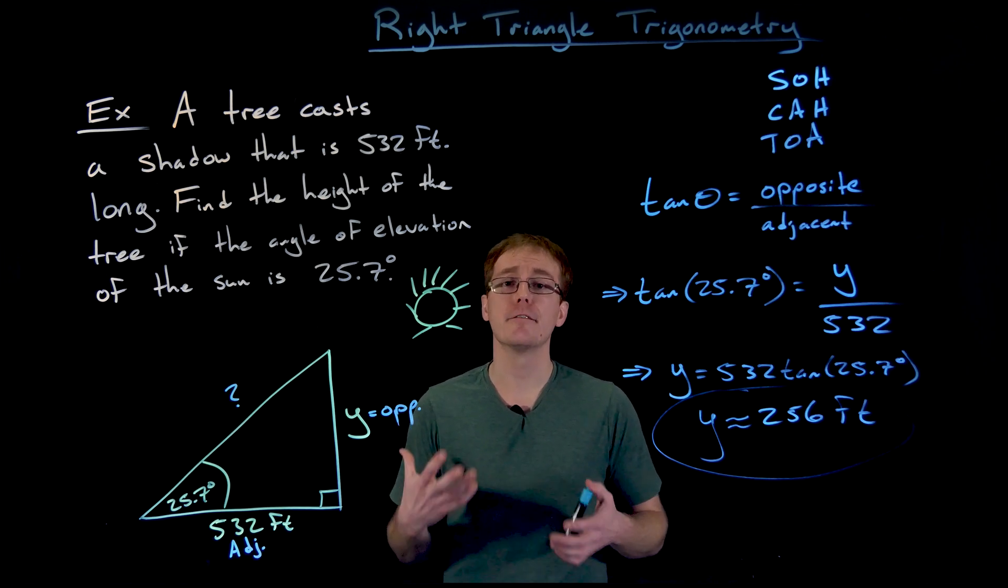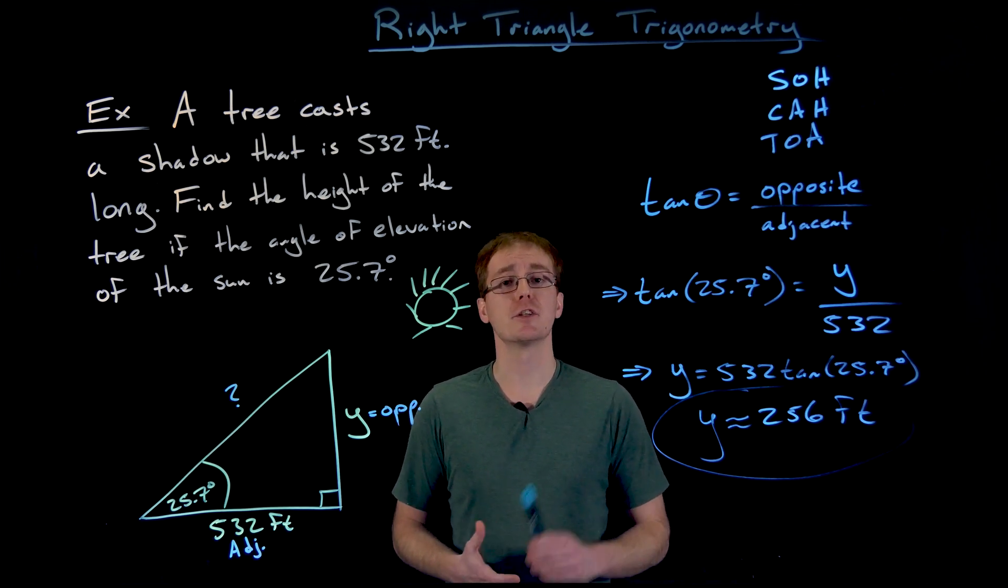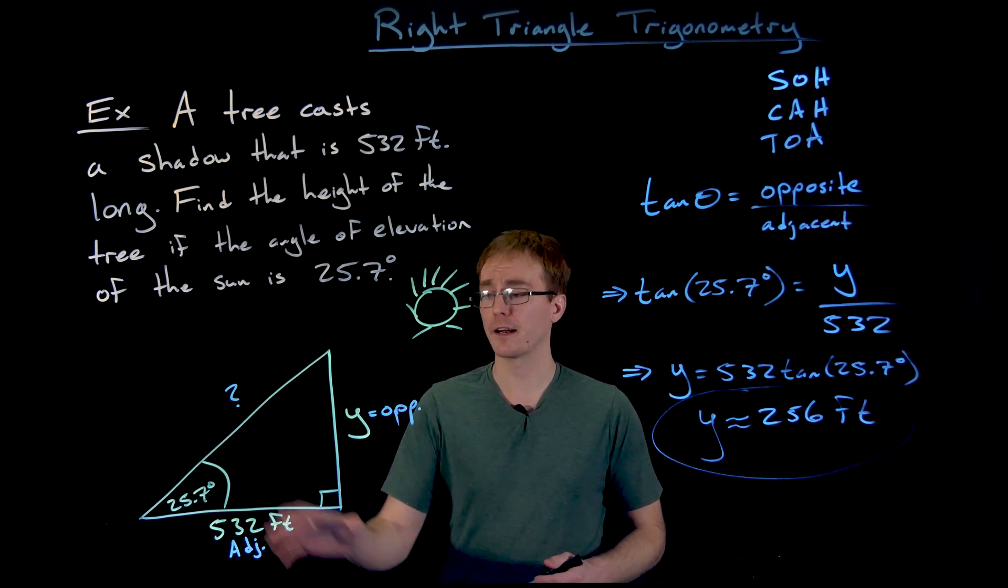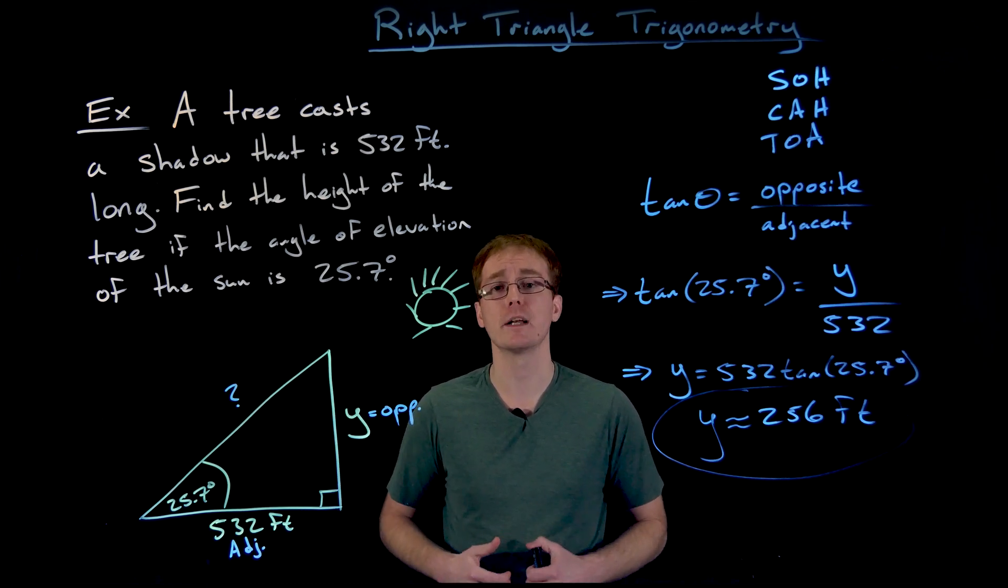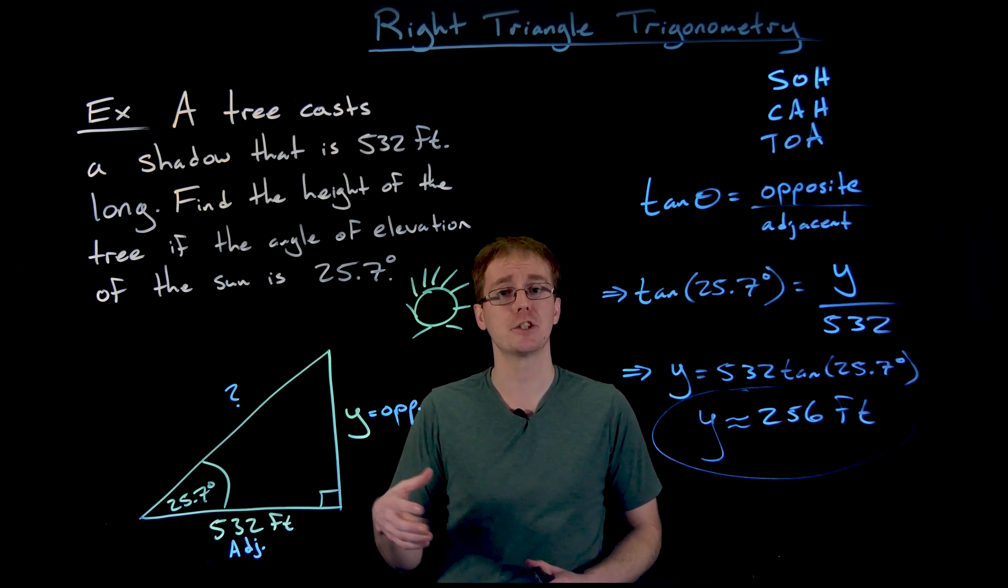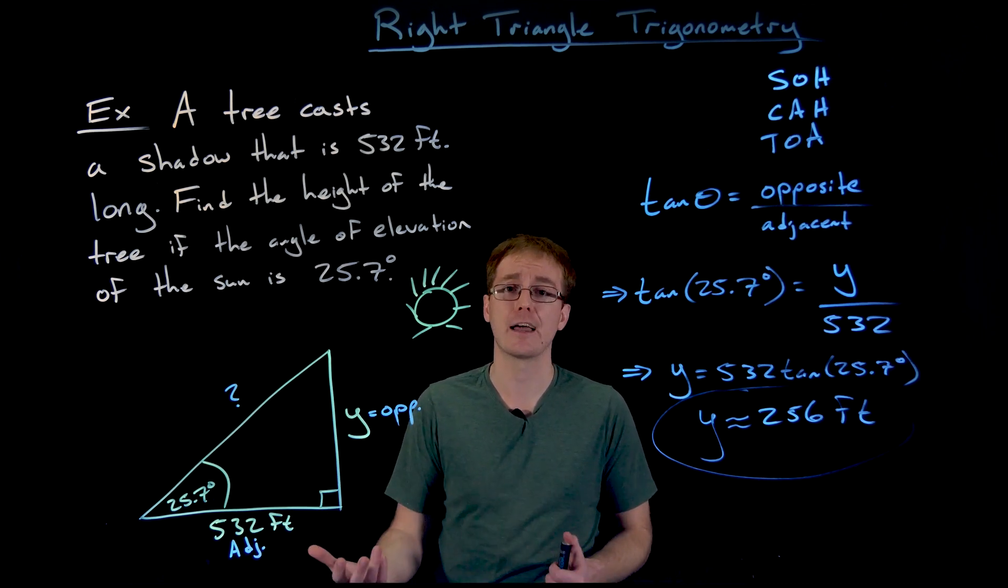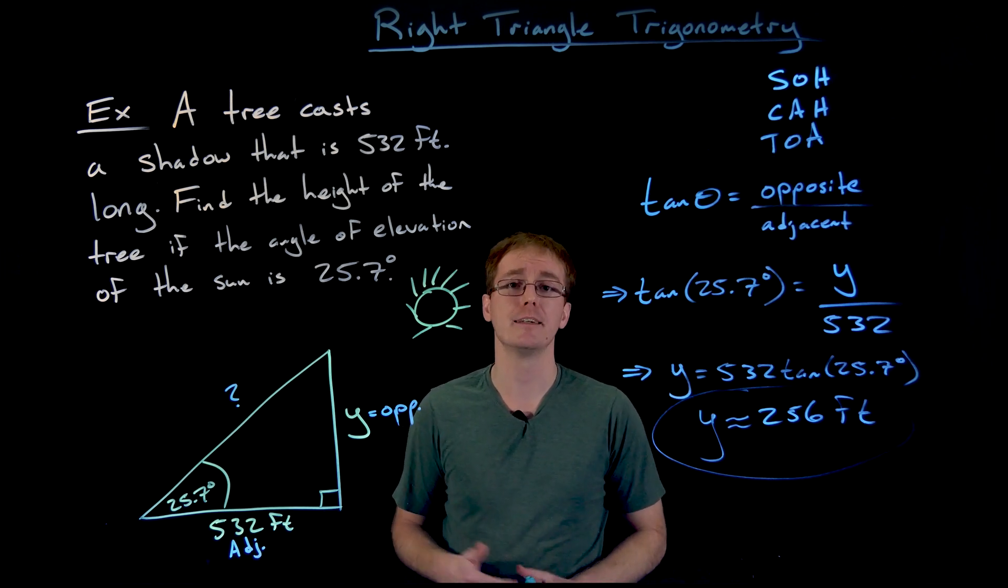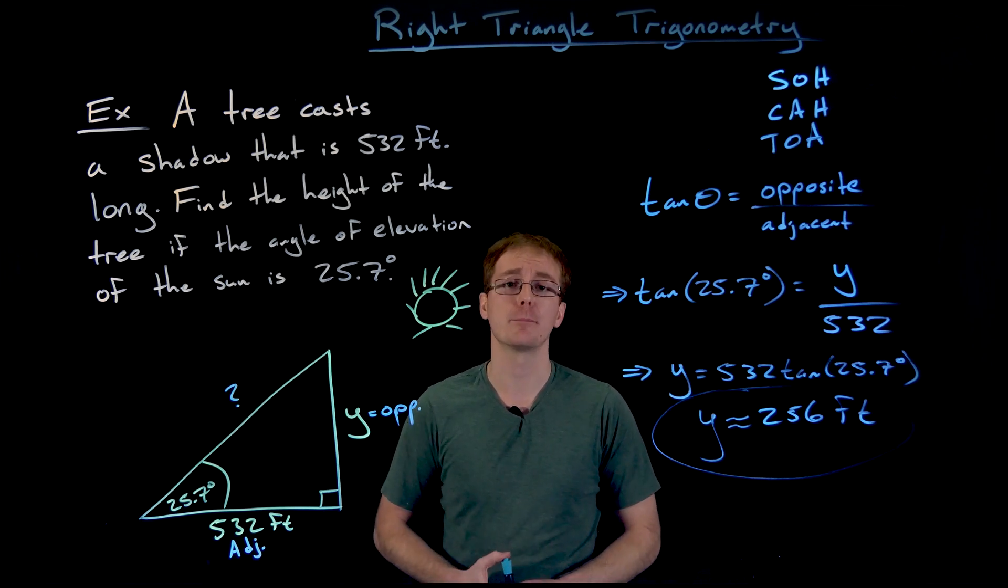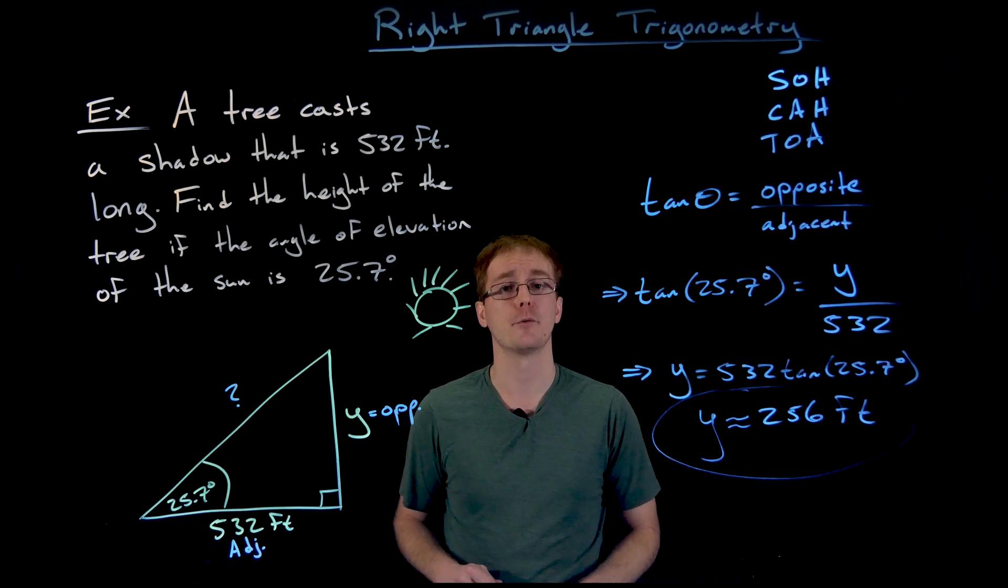The idea and the takeaway from an example like this is sometimes we cannot solve a right triangle or find all its side lengths using the Pythagorean theorem. It just depends on what information we are given. So if we aren't given enough information to find a side length using the Pythagorean theorem, we might try to use right triangle trigonometry instead, especially if one of our pieces of information is a non-right angle.